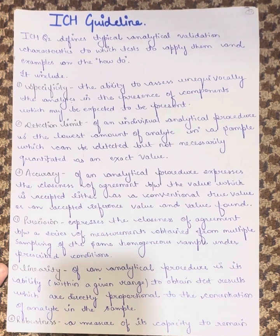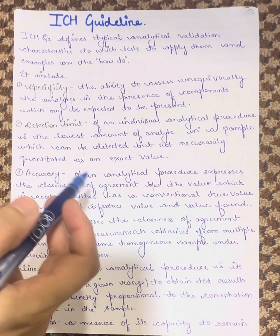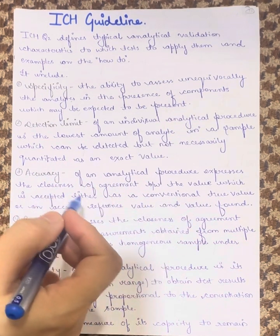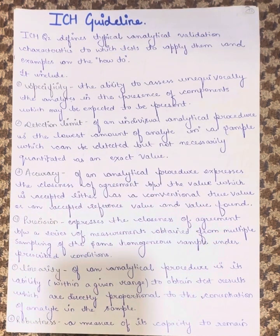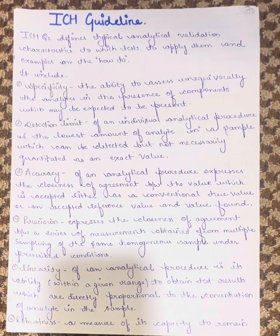Accuracy of an analytical procedure expresses the closeness of agreement between the value which is accepted — either as a conventional true value or an accepted reference value — and the value found. Accuracy means that the readings obtained from our analytical procedure are compared to the true or literature value to see how close they are.